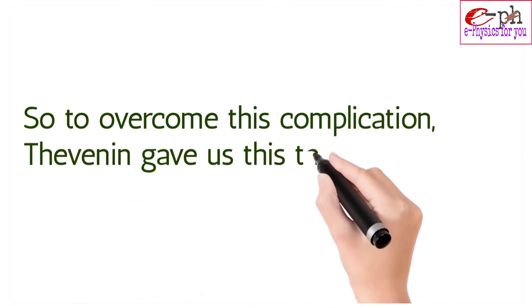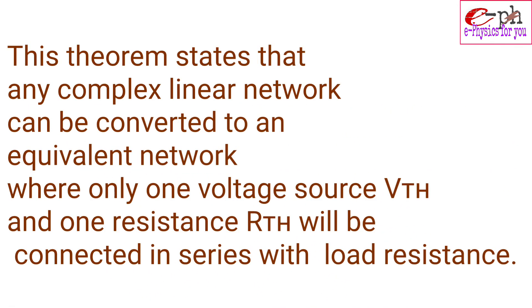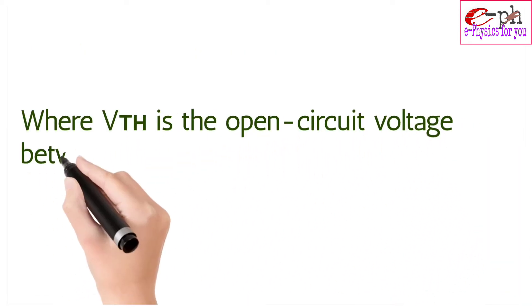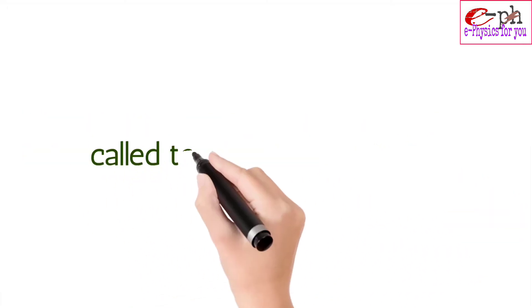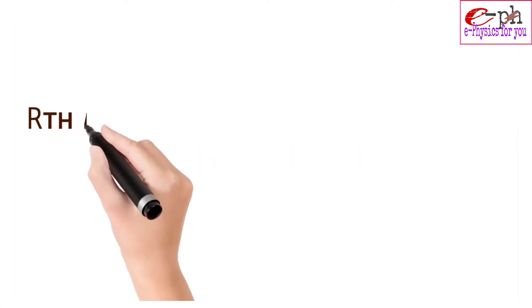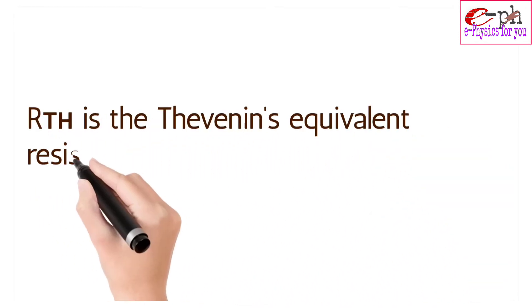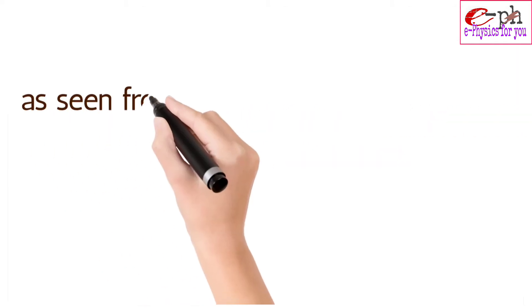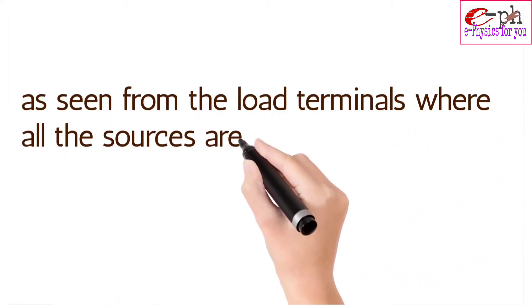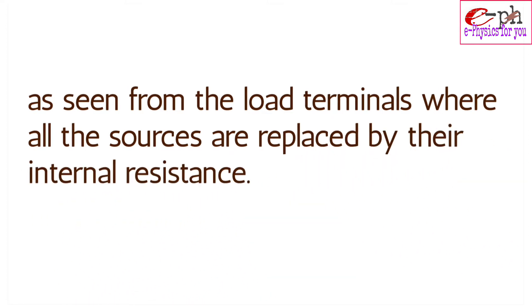To overcome this complication, Thevenin gave us this theorem. It states that any complex linear network can be converted to an equivalent network where only one voltage source Vth and one resistance Rth are connected in series with the load resistance. Vth is the open-circuit voltage between the required two terminals, called the Thevenin voltage, and Rth is the Thevenin equivalent resistance as seen from the load terminals where all sources are replaced by their internal resistance.